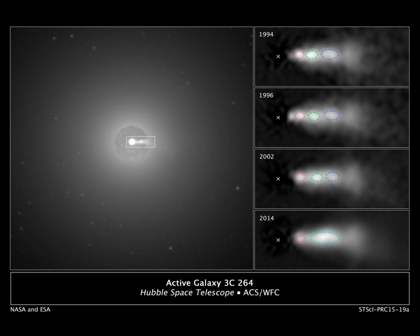An astrophysical jet is an astronomical phenomenon where outflows of ionized matter are emitted as an extended beam along the axis of rotation. When this greatly accelerated matter in the beam approaches the speed of light, astrophysical jets become relativistic jets as they show effects from special relativity. The formation and powering of astrophysical jets are highly complex phenomena that are associated with many types of high-energy astronomical sources.